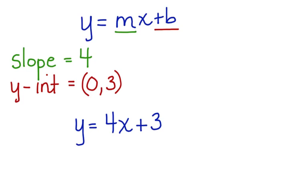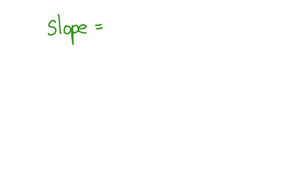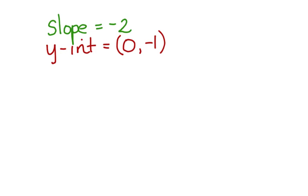Let's take a look at another one. What is the equation of a line if the slope equals negative 2 and the y-intercept is at (0, negative 1)? First, let's write down the slope-intercept form of an equation: y equals mx plus b.